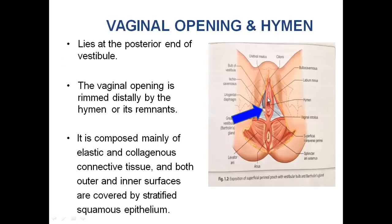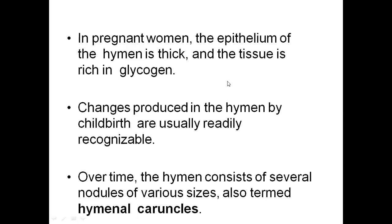The vaginal opening lies at the posterior end of the vestibule. The vaginal opening is rimmed distally by the hymen. The hymen is composed mainly of elastic and collagenous connective tissue, and both outer and inner surfaces are covered by stratified squamous epithelium. In pregnant women, the epithelium of the hymen is thick and the tissue is rich in glycogen. Changes produced in the hymen by childbirth are usually readily recognizable. Over time, the hymen consists of several nodules of various sizes, also termed hymenal caruncles.